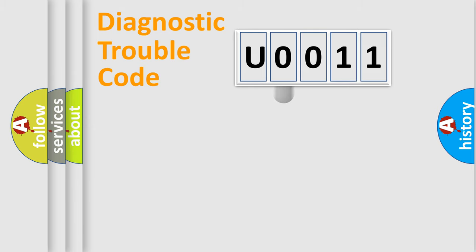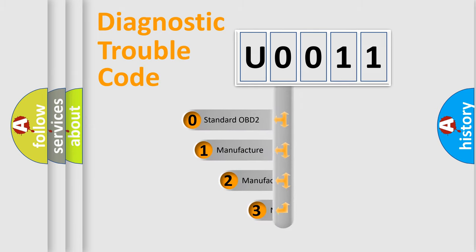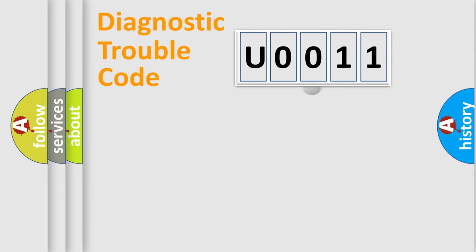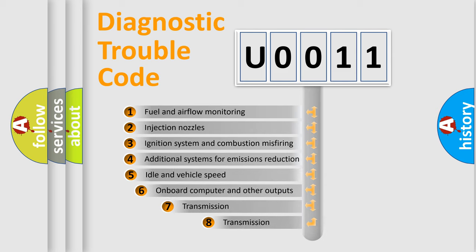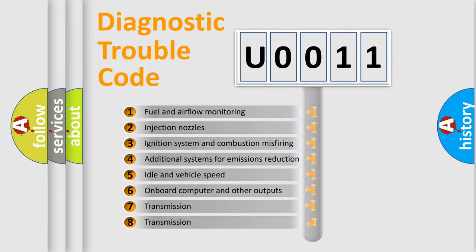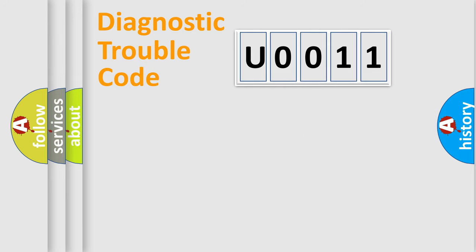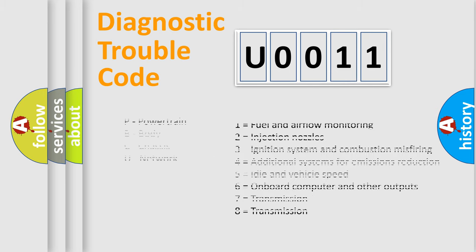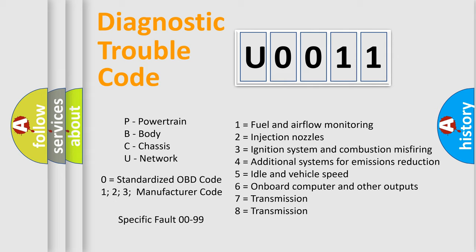This distribution is defined in the first character of the code. If the second character is expressed as zero, it is a standardized error. In the case of numbers 1, 2, or 3, it is a more specific expression of a car-specific error. The third character specifies a subset of errors. The distribution shown is valid only for the standardized DTC code. Only the last two characters define the specific fault of the group. Such a division is valid only if the second character code is expressed by the number zero.